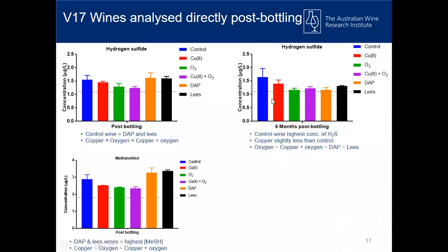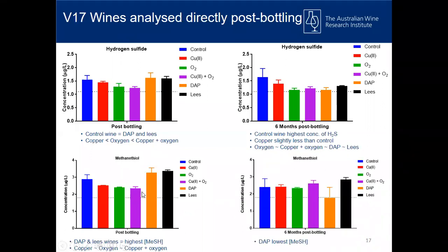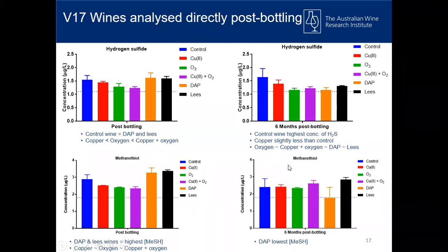Looking at methanethiol — initially, the DAP and lees treatment actually increased methanethiol compared to our control samples, and the copper, oxygen, and combined copper and oxygen treatments were the most effective. But a very interesting thing happened six months post-bottling: the methanethiol concentration appeared quite similar for all treatments. This is something we hear from industry a lot — methanethiol is quite hard to remediate. It is possible that initially the decrease we saw was the oxidation of methanethiol into larger molecular weight compounds, and that this oxidized compound later during storage was reduced back, resetting methanethiol concentrations to original values.